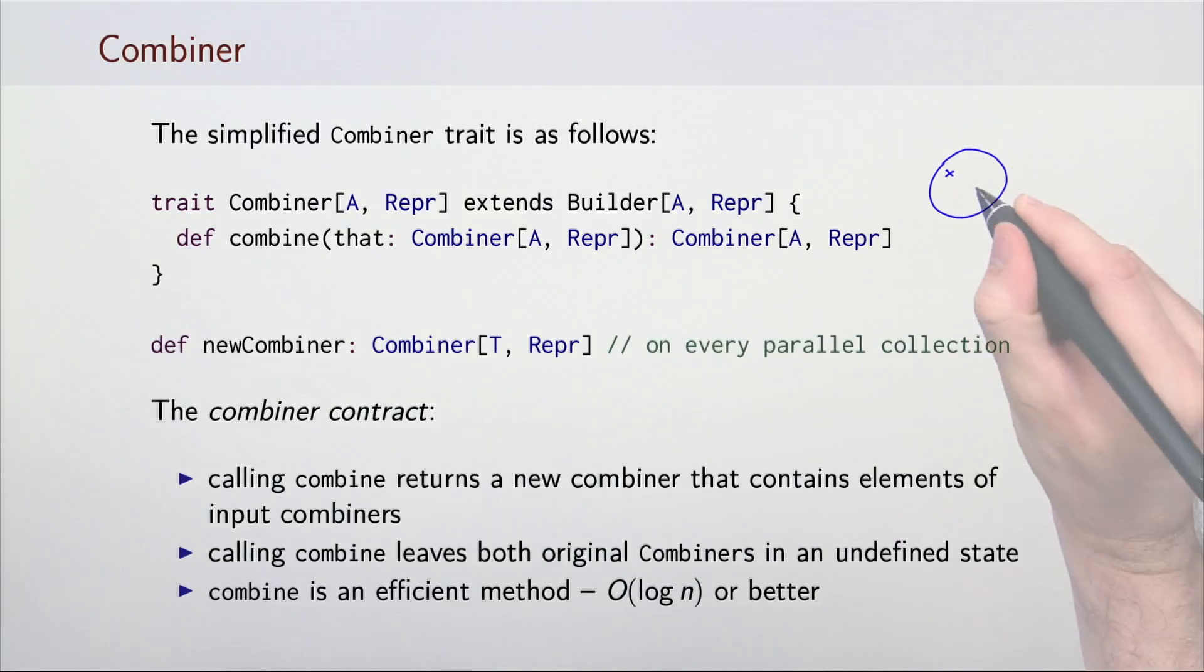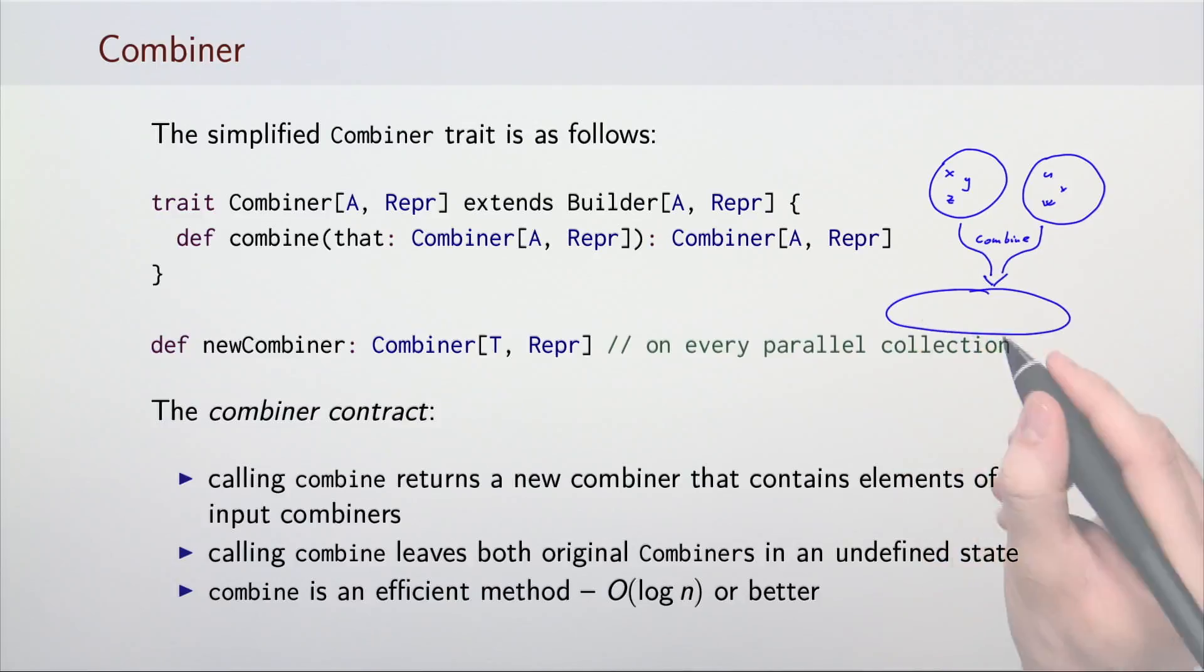The combine method must return a new combiner such that it contains the elements of both input combiners. For example, if we have two combiners with elements x, y and z and elements u, v and w, after we call combine we get a new combiner with elements x, y, z, u, v and w. After combine is called, both input combiners are left in an undefined state and can no longer be used.